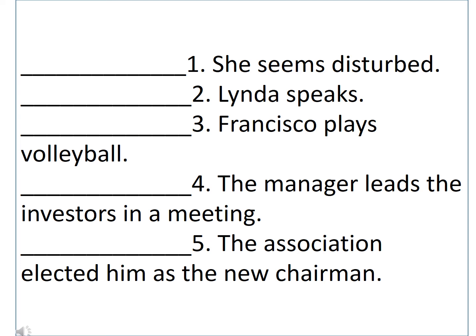Number 2: 'Linda speaks.' Linda is our subject. Speaks is our verb. So the answer is SV. Number 3: 'Francisco plays volleyball.' Our subject is Francisco. The verb is plays. And volleyball is the direct object. So the answer is SVDO.